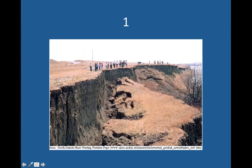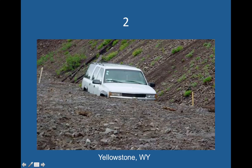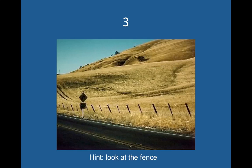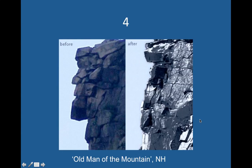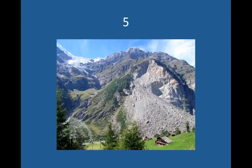Number one is slump — you can tell because the entire chunk stays together. Number two is a mudflow — you can tell because it was very liquid when it happened, which is why the car is buried and not crushed. Number three is creep — that's why the fence is leaning. Number four was a rockfall — this was the Old Man of the Mountain in New Hampshire. And number five was a rockslide or landslide. You can tell because it looks fairly dry — dry sediment, dry rocks. You'll also notice a glacier in the picture, which we'll learn about later.